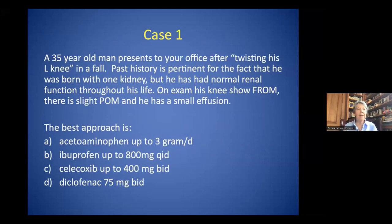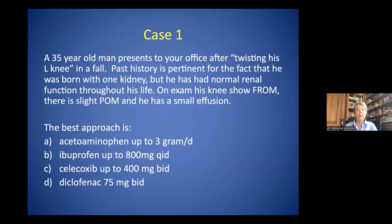This will be a case-based approach, and this is case one. A 35-year-old man presents to your office after twisting his left knee in a fall. Past history is pertinent for the fact that he was born with one kidney, but he's had normal renal function throughout his life. On exam, his knee showed full range of motion, slight pain on motion, and a small effusion. The best therapeutic approach is shown here — select your answer and we'll come back to it at the end of this section.